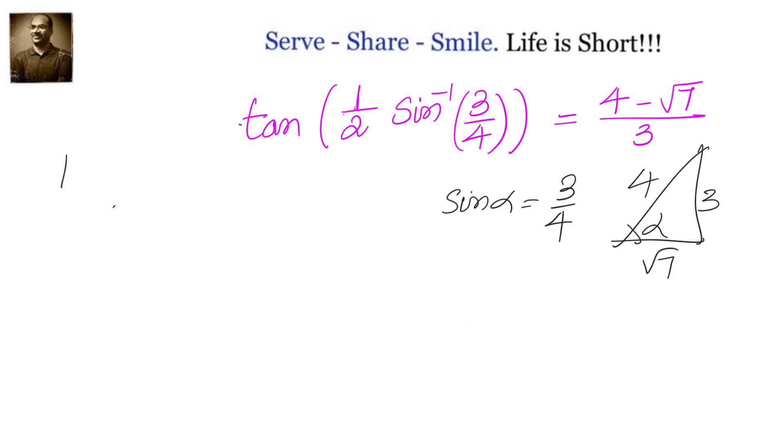We know sin alpha, cos alpha, and tan alpha. Tan alpha by two is the square root of one minus cos alpha divided by one plus cos alpha.